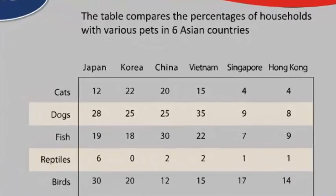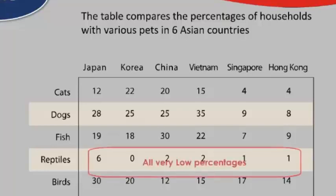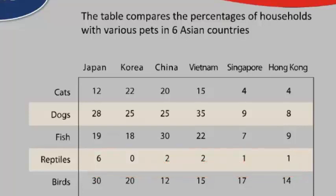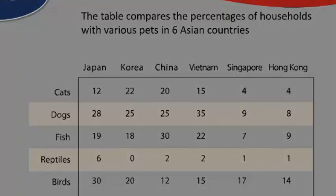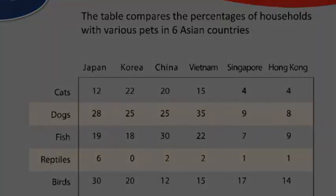Talk about the trend and then note all the data. For example, we could combine reptiles all together because those numbers are not significant. We could say that for all six countries, reptiles was very small and no bigger than 6% anywhere. And then when comparing some of the other data, we can go from top to bottom, or we could choose to describe just a part of it.